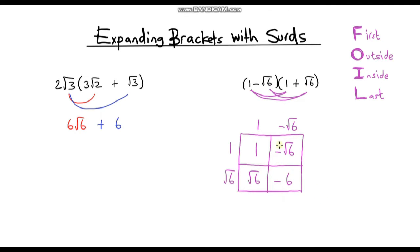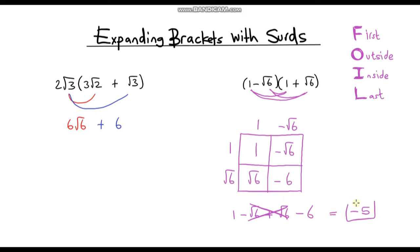We've expanded our brackets but we need to simplify. Writing all the terms: 1 minus √6 plus √6 minus 6. Notice the middle two terms cancel out — negative √6 plus √6 is 0. So all we're left with is 1 minus 6, which is negative 5. That is our final answer. From all this work involving surds, our final answer is just an integer, because those middle terms cancel out.